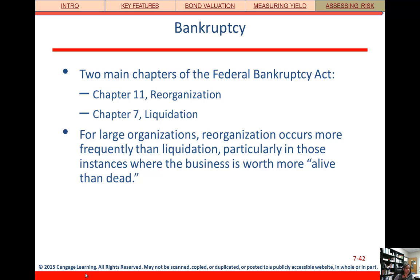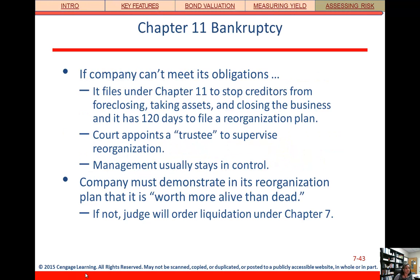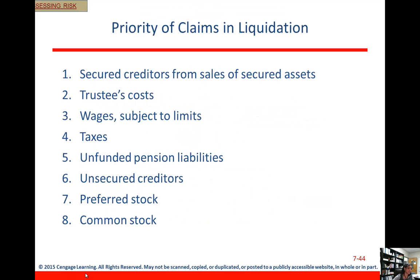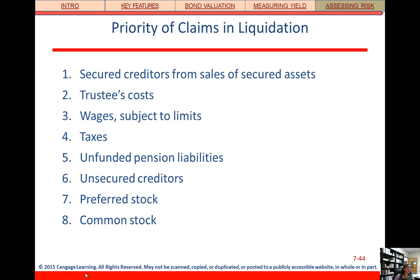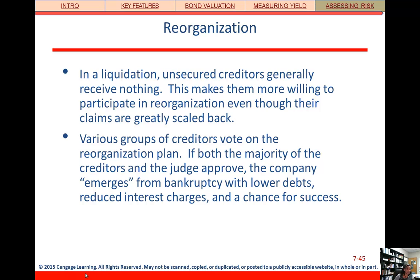Worst case scenarios include bankruptcy. You should know that Chapter 11 and Chapter 7 exist. Chapter 11 means the firm thinks it can work things out and wants to restructure its debt — it gets protection from creditors while doing so. Chapter 7 means the firm is done — liquidation — and there's a pecking order for who gets paid first. If a firm can't show it's viable under Chapter 11, it flips to Chapter 7. In a reorganization versus liquidation, creditors play a huge role and must agree — it's a negotiated process. Just understand the big picture of how this works.